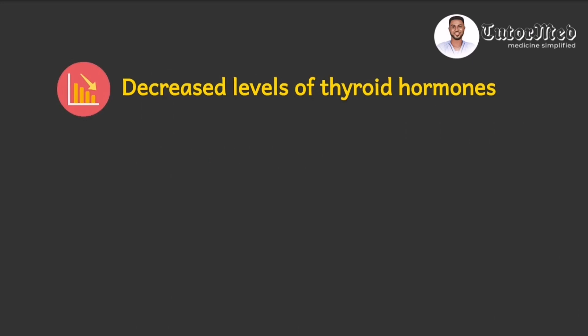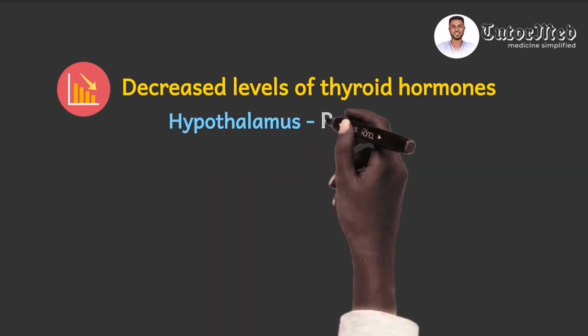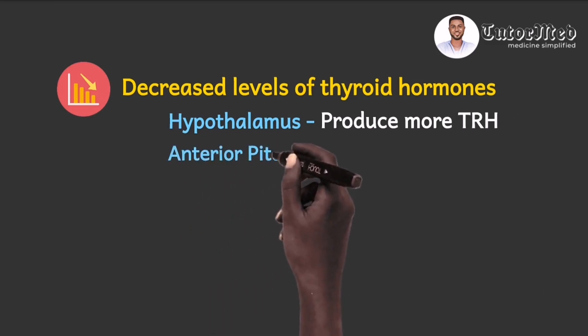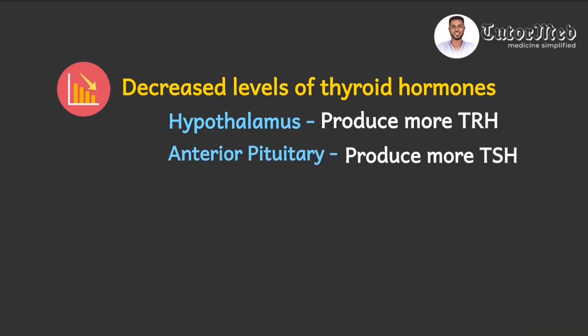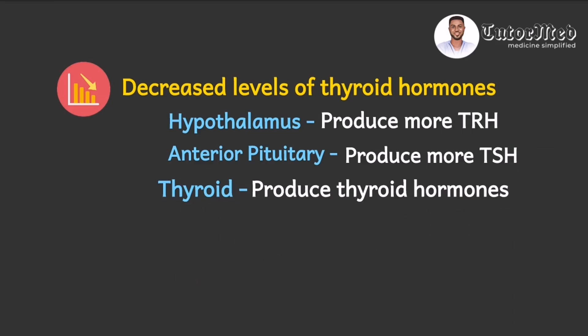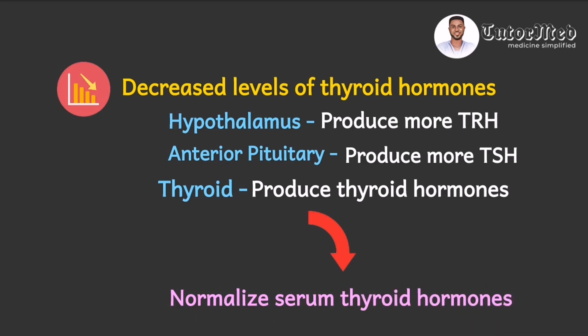Conversely, if thyroid hormone levels are decreased below normal, this reduced level signals the hypothalamus to produce more TRH. More TRH stimulates the anterior pituitary to produce more TSH, and the increased TSH tells the thyroid gland to produce more thyroid hormones, ultimately raising the thyroid hormone levels back to normal.